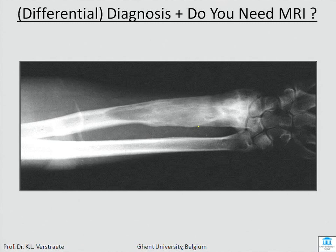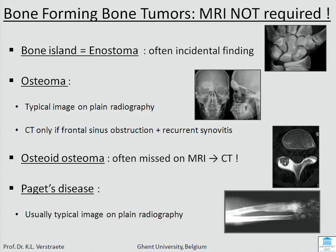So now we go to the solutions. These were all bone forming tumors. You have seen the white spots that are bone islands and osteoma. It's an incidental finding — don't touch and don't do MRI.